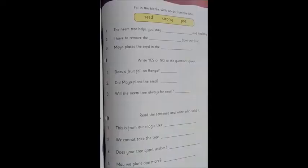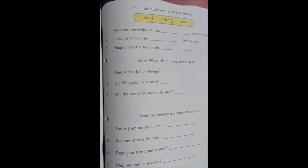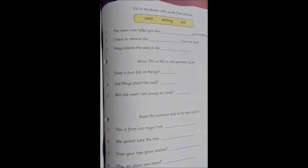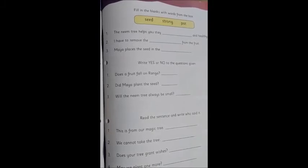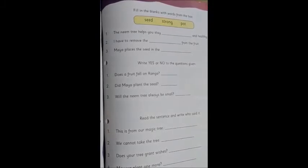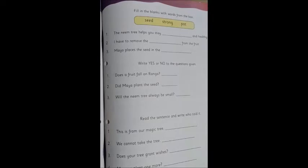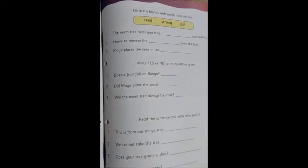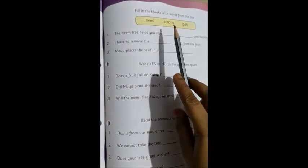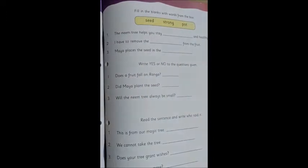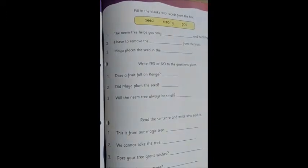All three points will be done on the same page. So now we are going to do page 73 from our Little Thinker English. This page is in three different parts. Let's see the first part. What is written? Fill in the blanks with words from the box. So let's first read the words from the box.